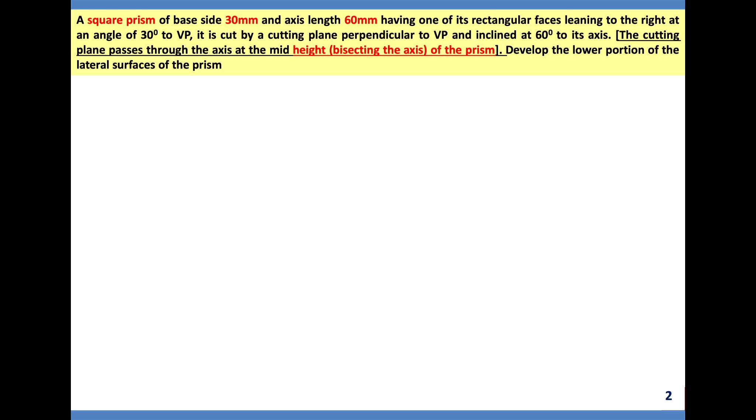I have considered a square prism of base side 30 mm and axis length 60 mm, having one of its rectangular faces leaning to the right at an angle of 30 degrees to VP. It is cut by a cutting plane perpendicular to VP and inclined at 60 degrees to its axis. The cutting plane passes through the axis at mid height, bisecting the axis of the prism. Develop the lower portion of the lateral surfaces of the square prism.